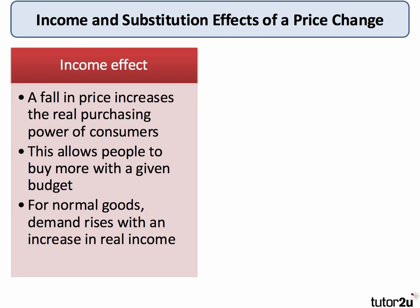Why does the demand curve slope downwards, for example when the price goes down? We need to make a distinction between the income effect and the substitution effect. First, the income effect. If the price of a product goes down — for example, if coffee becomes cheaper — a fall in the price increases the real purchasing power of consumers. Assuming they've got a given budget per day or per week for their coffee, if the price goes down, that allows people to buy more coffee with a given amount of income. For normal goods, demand goes up as income increases in real terms.